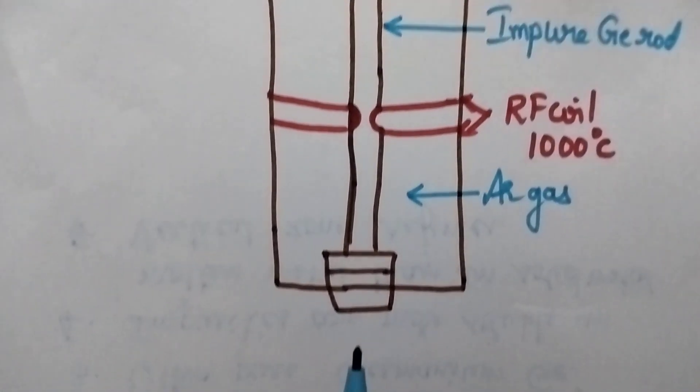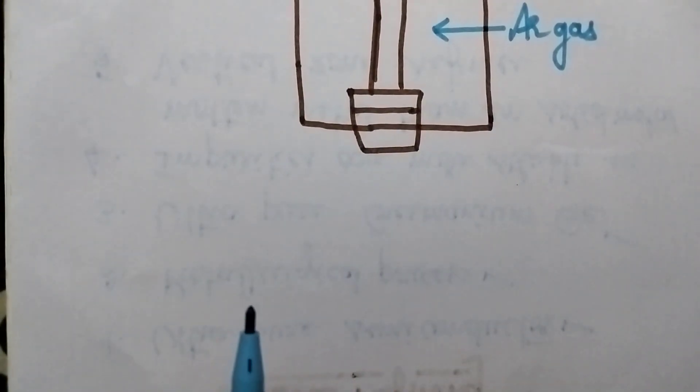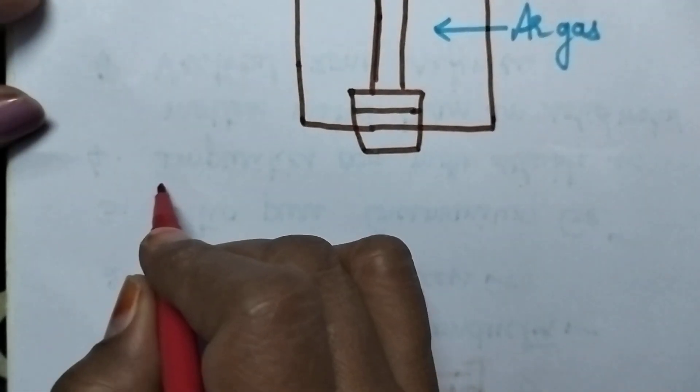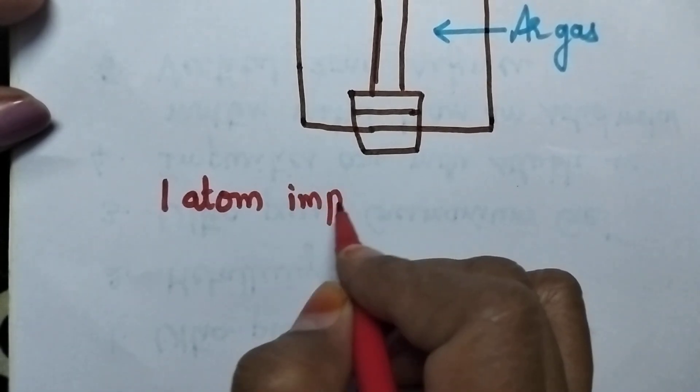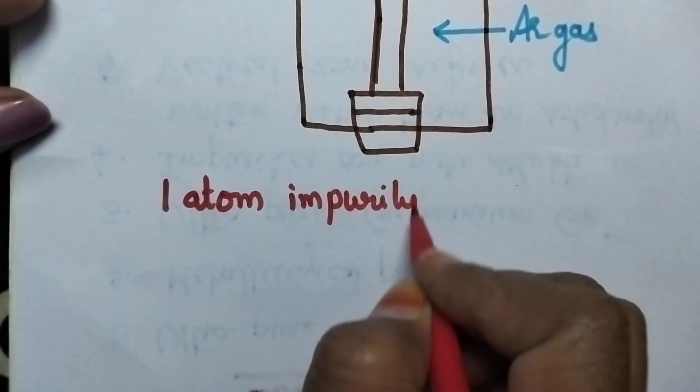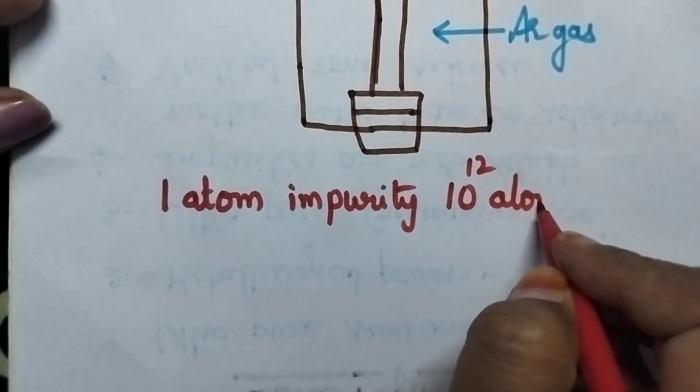By this method, it is possible to get germanium with ultra purity. That is, it is possible to get only one atom impurity to 10 to the power 12 atoms of germanium.